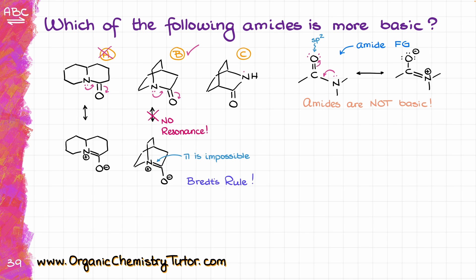Just to double check, I'm also going to do the same thought experiment for molecule C, where I take the electrons from the nitrogen and move those towards the carbonyl. In that case I will have a resonance structure looking like this, which is not a violation of Bredt's rule. We can have double bonds somewhere in the bridge, for as long as it's not at the point where the bridge connects with the other bridges. So that resonance contributor is going to be stable, which means that molecule C is not going to be basic, just like we would expect for any other normal amide.